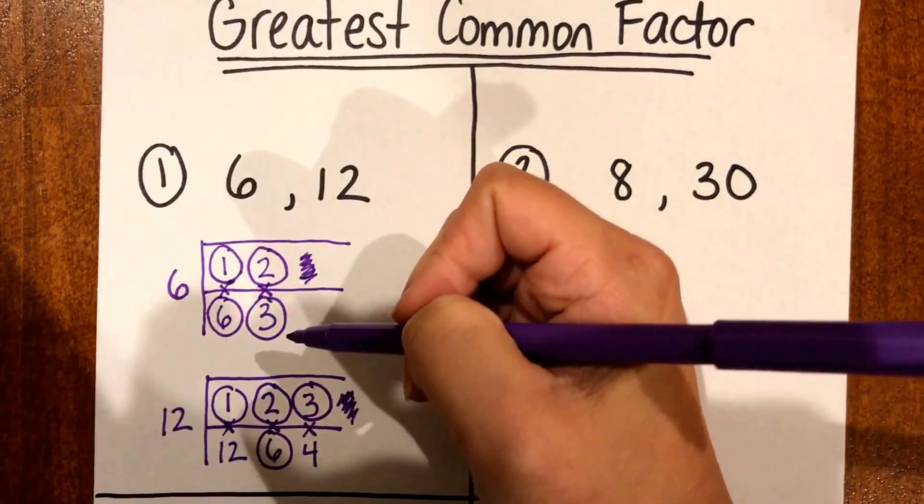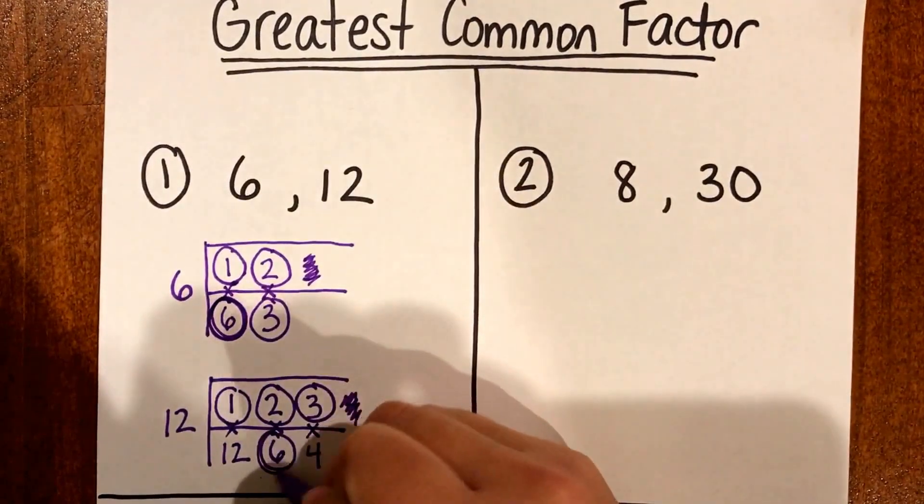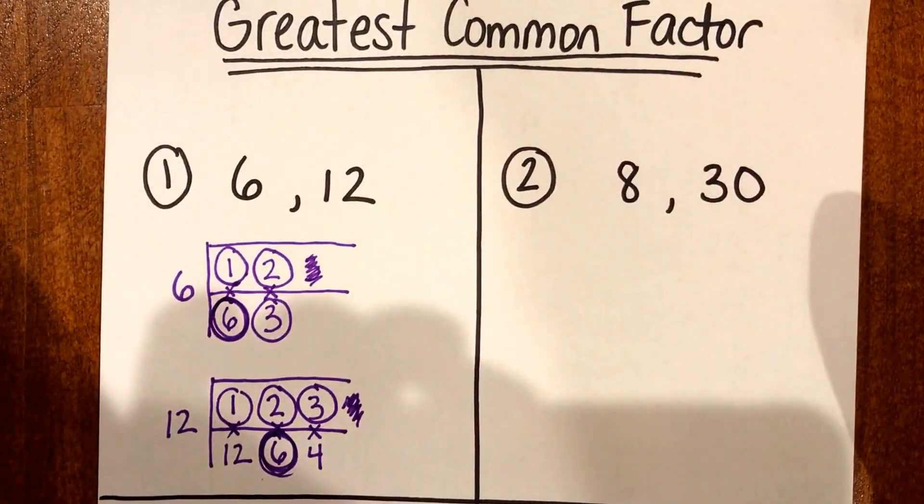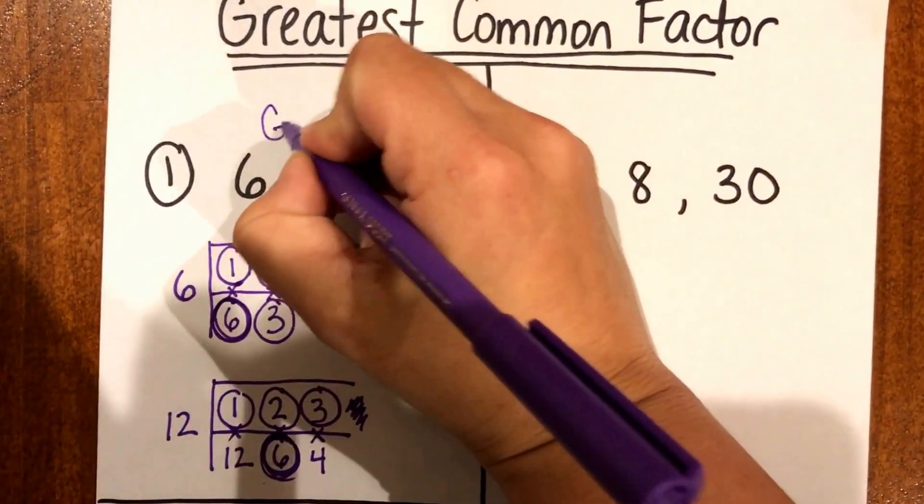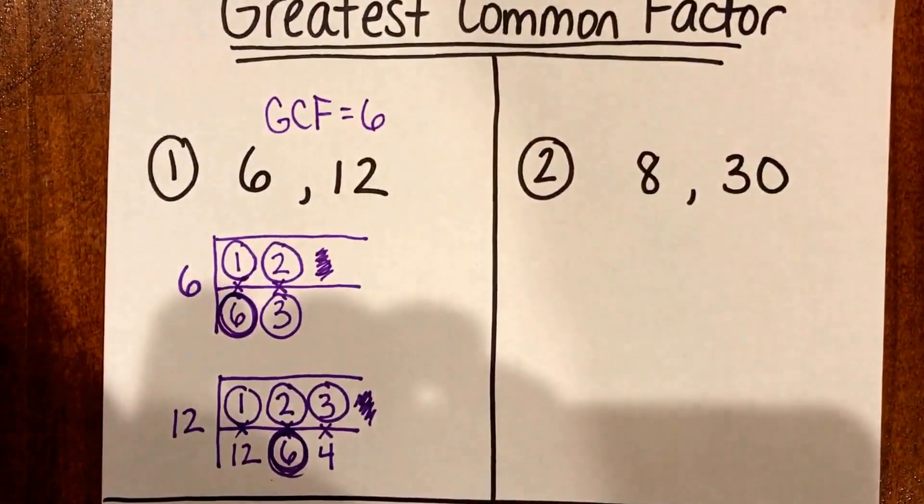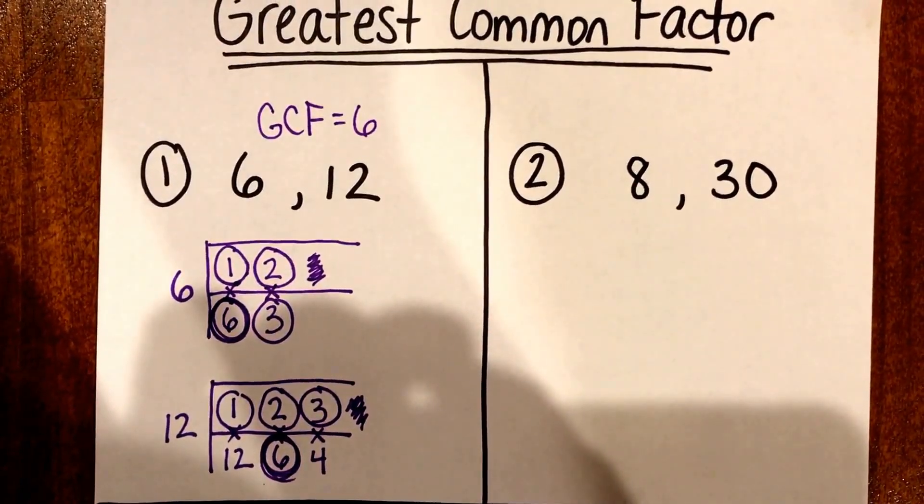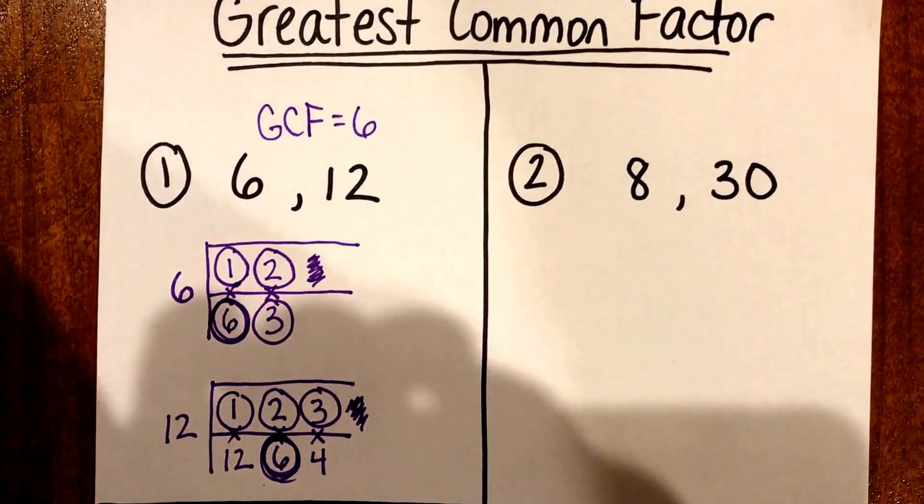So out of the circled numbers I can see already that 6 is the biggest number that's the same between the two. So I'll know for number one that my greatest common factor or my GCF is going to be 6. And in this video I just showed you how to find the greatest common factor using the F method.